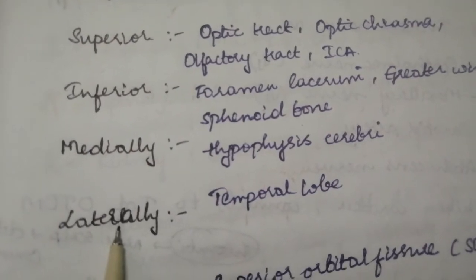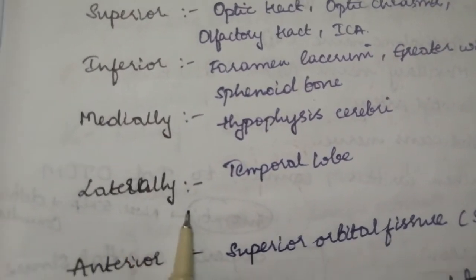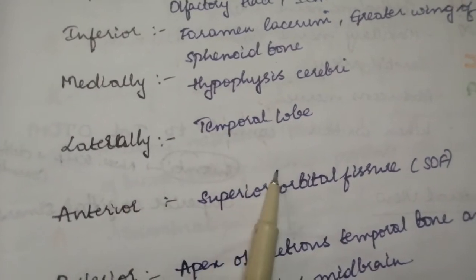Medially it has hypophysis cerebri or it is also called as pituitary gland. Laterally it has temporal lobe.